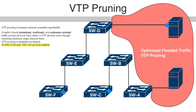With optimized flooded traffic using VTP pruning enabled in the switched network, the broadcast traffic from switch A is not forwarded to switches C, E, and F because traffic for the red VLAN has been pruned on the links shown — port 5 on switch B and port 4 on switch D.